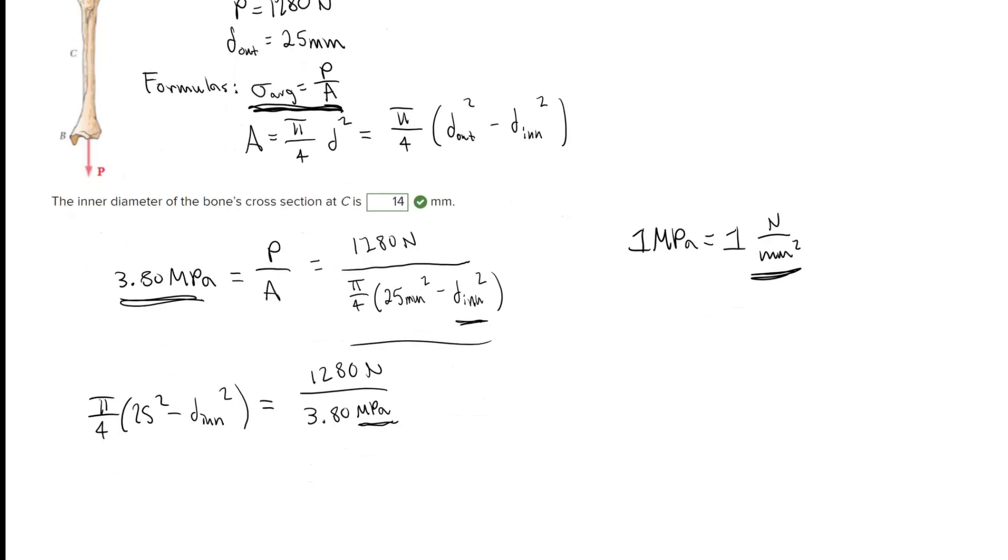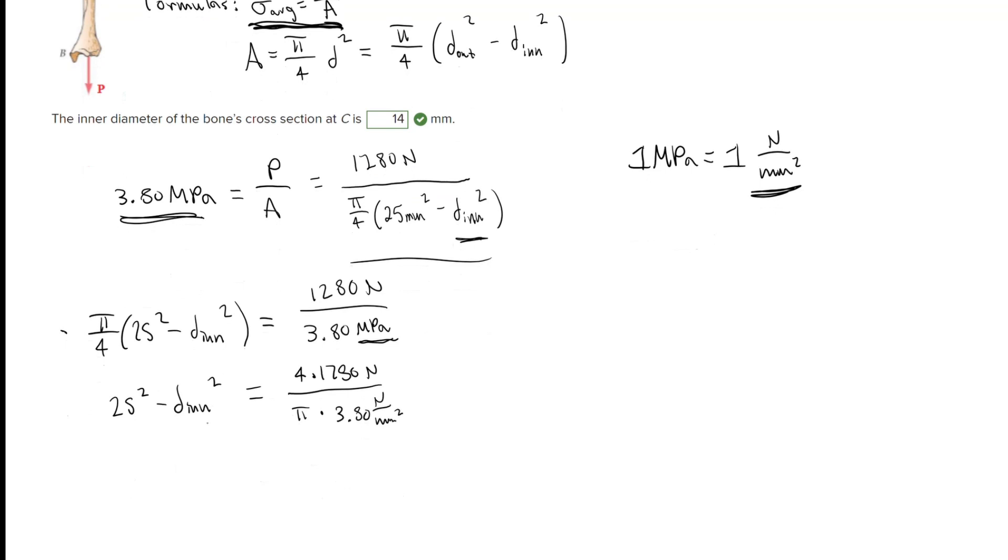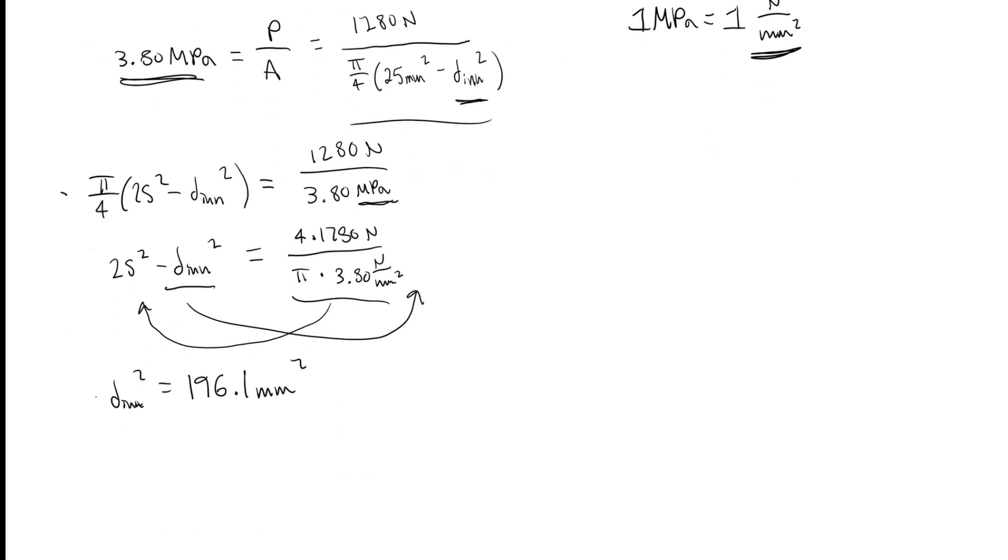We're going to go ahead and divide by pi on this side and multiply by four on this side to get rid of the pi over four. Then we're going to go ahead and do some rearrangement here. We're going to add this over here and then subtract this over to this side, and we're going to get the inner diameter squared is equal to 196.1 millimeters squared. Then we can go ahead and take the square root of both of these.